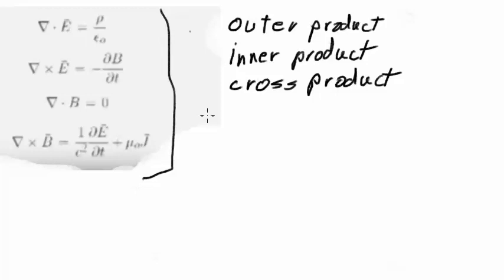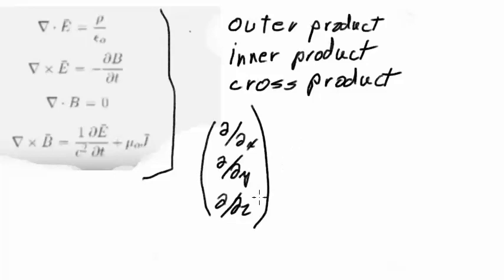This guy over here is called a nabla, and the nabla basically consists of del/del x, del/del y, and del/del z. It's a vector, but it's not like a vector of numbers, it's a vector of derivatives. It's an operator vector. And this E over here, I can write as E sub x, E sub y, E sub z.